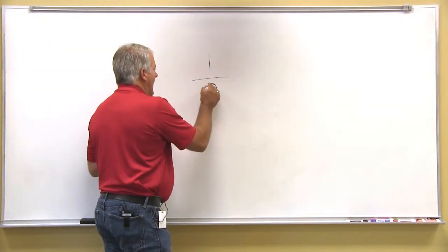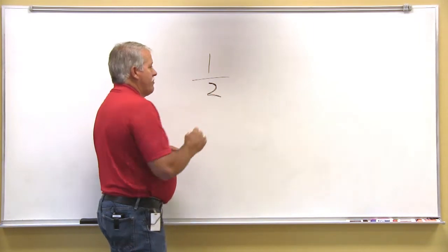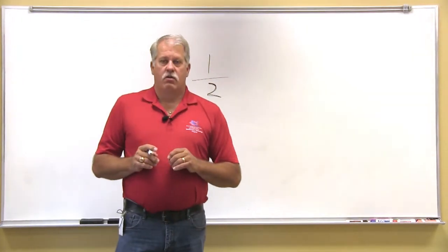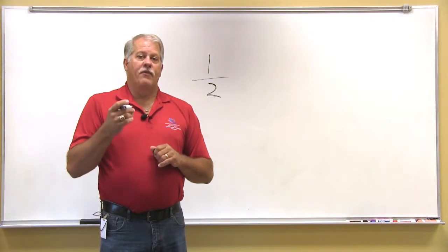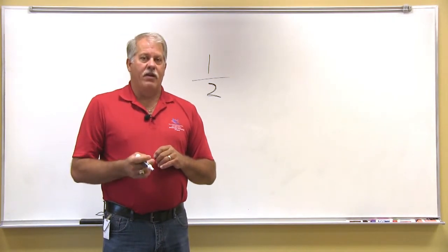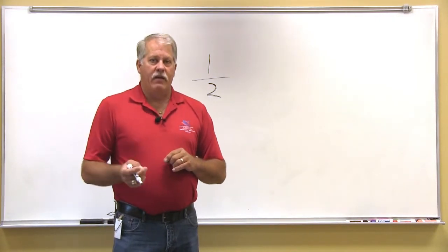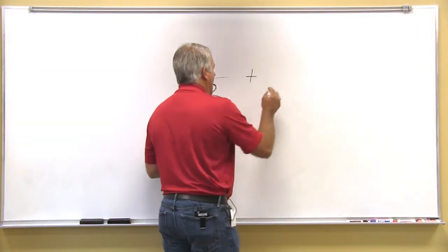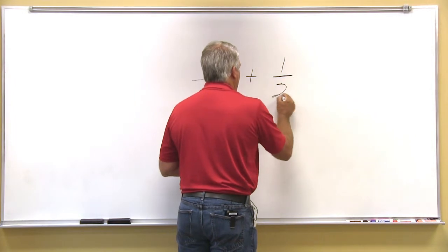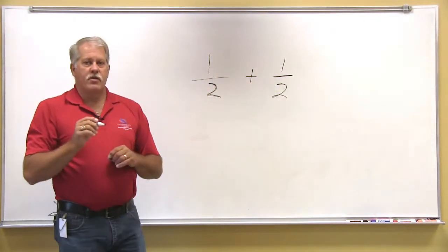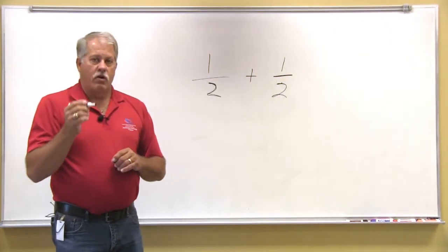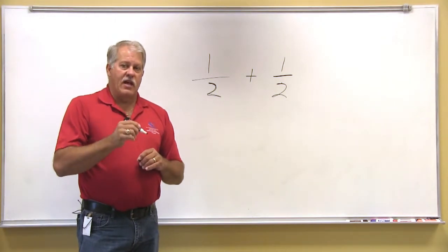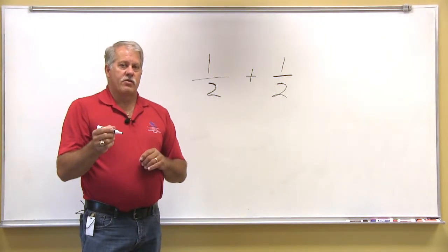When you add and subtract fractions, the common rule is that you have to have common denominators to be able to add those. So when we are adding fractions, if we're adding a fraction to a fraction, as long as the two numbers that are on the bottom, which are the denominators, are the same, then we can add those two together.